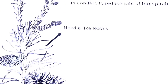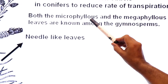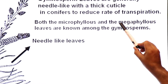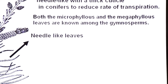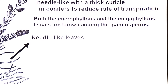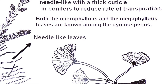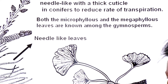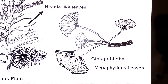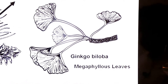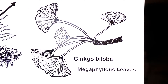Both microphyllous (single-vein) leaves and megaphyllous (polyvein) leaves are known among the gymnosperms. In mein microphyllous leaves bhi paye jate hain, megaphyllous leaves bhi paye jate hain. This is the megaphyllous leaf of the genus Ginkgo biloba. To in mein se kuch mein microphyllous aur kuch mein megaphyllous leaves paye jate hain.